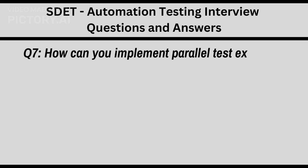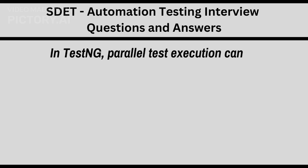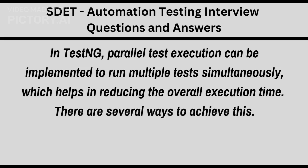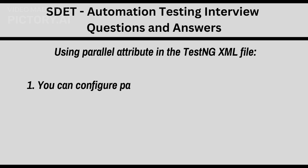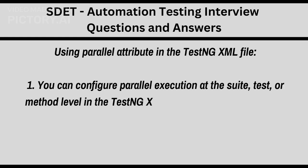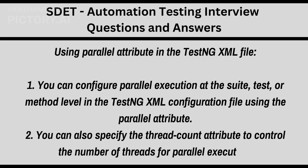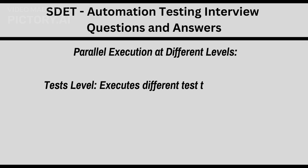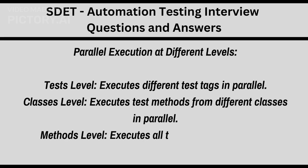Q7. How can you implement parallel test execution in TestNG? Provide an example. In TestNG, parallel test execution can be implemented to run multiple tests simultaneously, which helps in reducing overall execution time. You can configure parallel execution using the parallel attribute in the TestNG XML file at the suite, test, or method level. You can also specify the threadCount attribute to control the number of threads. Parallel execution levels: tests level executes different test tags in parallel; classes level executes test methods from different classes in parallel; methods level executes all test methods in parallel.